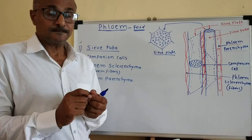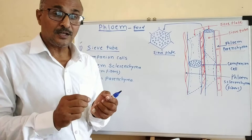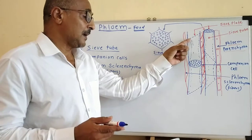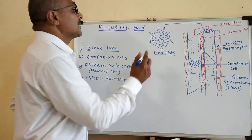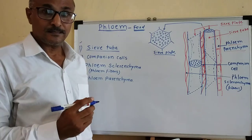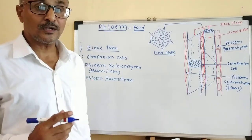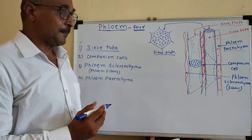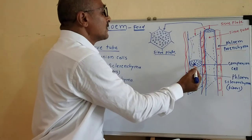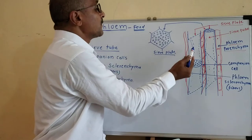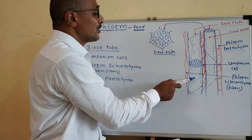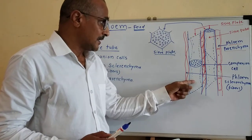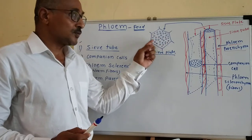Hence, that tube is called as sieve tube. The sieve tube having this plate — it may be diagonal or it may be transverse. That plate, you see here, is having such a type of pores, also called as perforations. These pores are present on the plate, which is sometimes diagonally or transversely placed. Through these pores, the food material passes from one cell to other cell — it is translocated from one cell to other cell through this sieve plate.